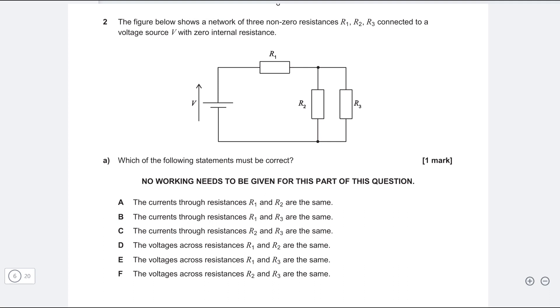Okay, well, now let's have a look at this question. So it's question 2 from Section 2, 2016. The figure below shows a network of three non-zero resistances R1, R2 and R3. Okay, well, none of these are zero resistances. Which of the following statements must be correct?